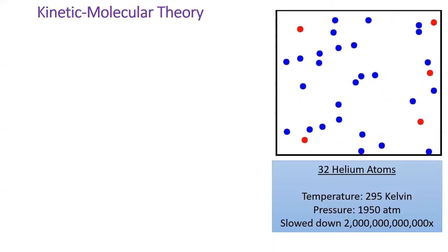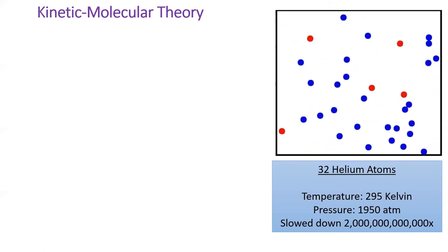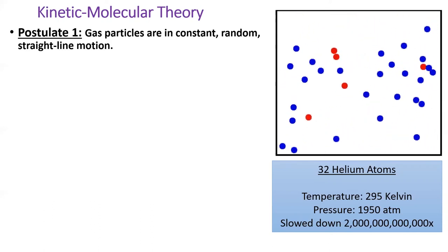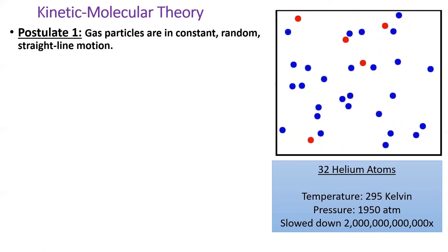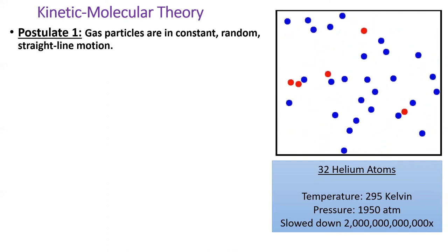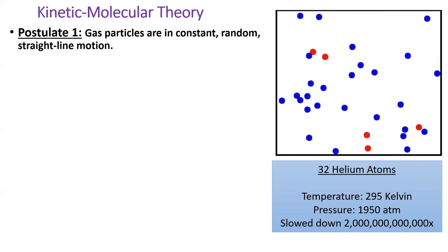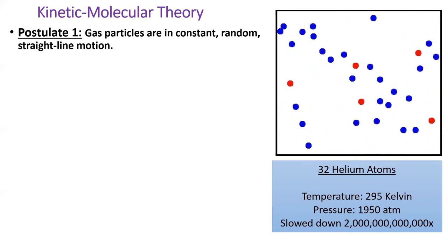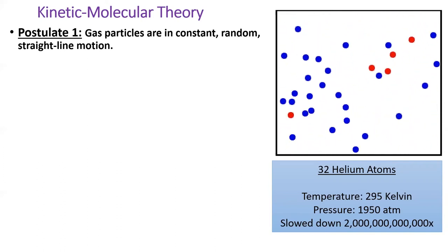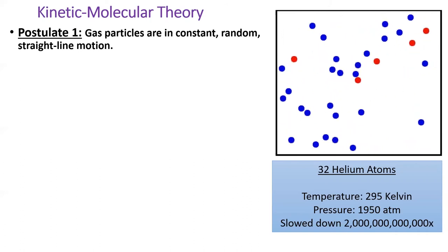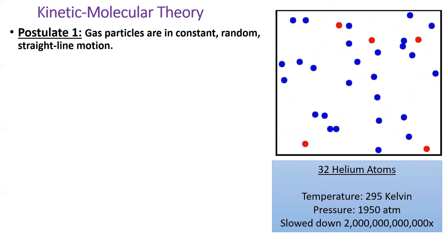There are five postulates of kinetic molecular theory. First, we need to see gases as a large number of particles in constant, random motion, such as in this animation. In fact, this animation is about two trillion times less chaotic than gases in real life, as it has been slowed down considerably.